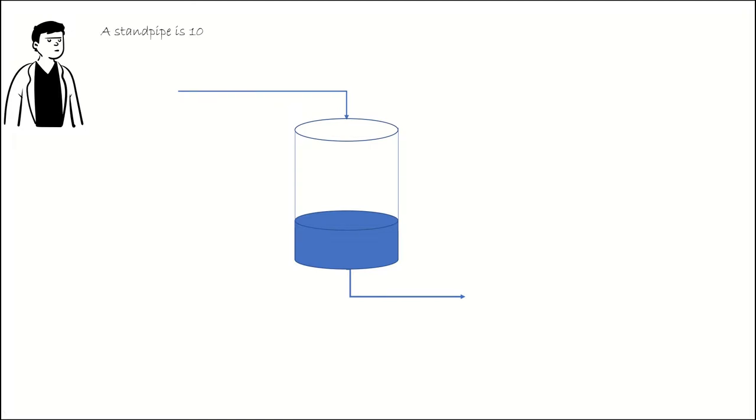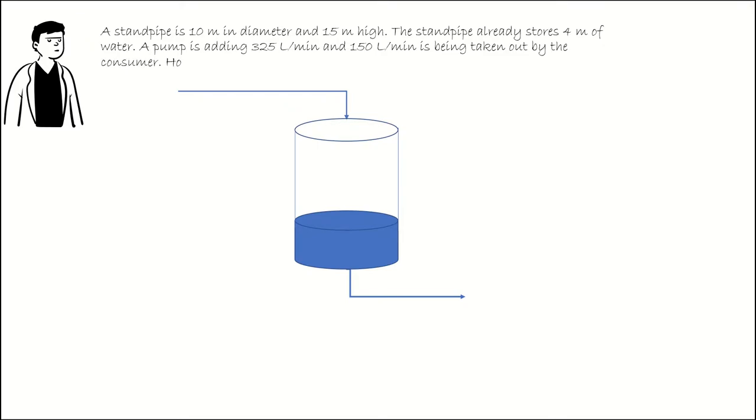A standpipe is 10 meters in diameter and 15 meters high. The standpipe already stores 4 meters of water. A pump is adding 325 liters per minute and 150 liters per minute is being taken out by the consumer. How many days will it take to fill the rest of the tank?